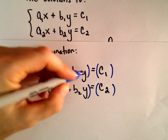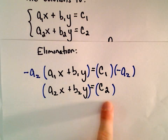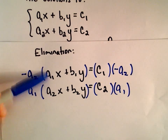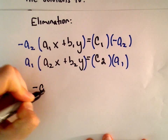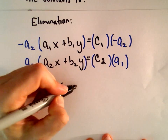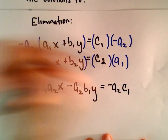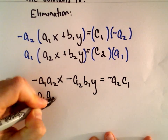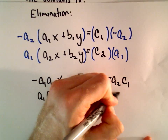I'm going to multiply my first equation, both sides, by negative a2. And for the second equation, I'm going to multiply by positive a1. That's going to give us the same coefficients but opposite sign on the x's. When we distribute, we'll have negative a1·a2 times x, and — keeping things alphabetized — negative a2·b1 times y equals negative a2·c1. For the second equation, we'll have a1·a2·x plus a1·b2·y equals a1·c2.